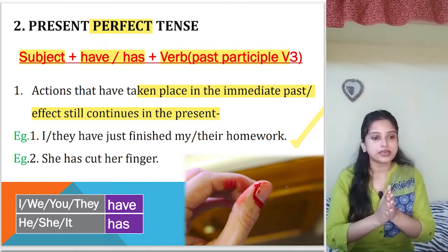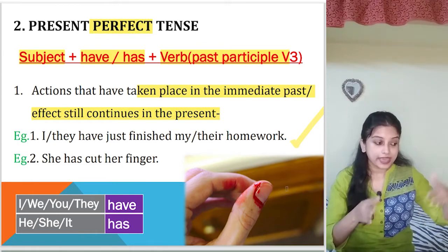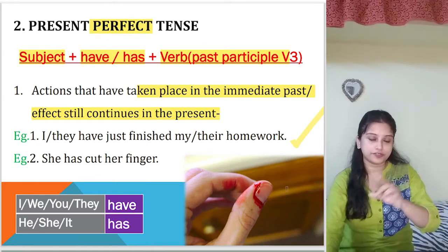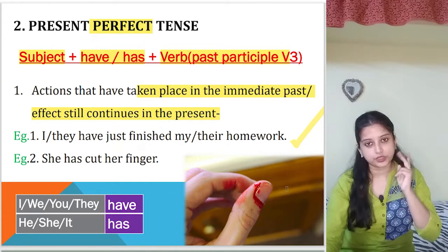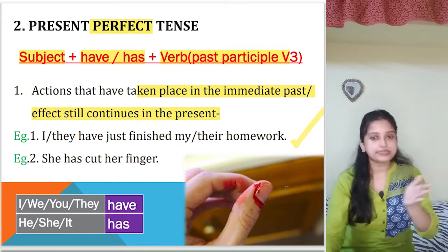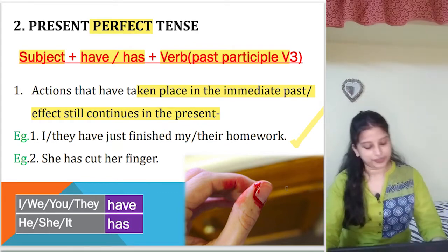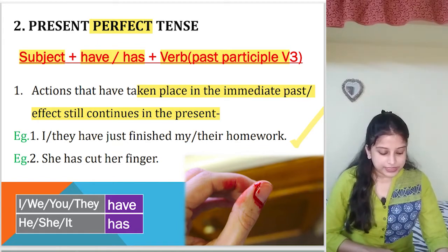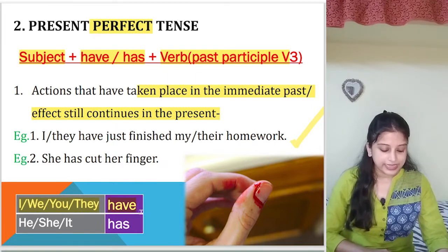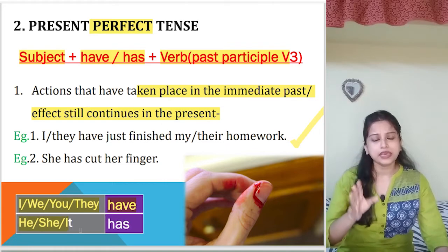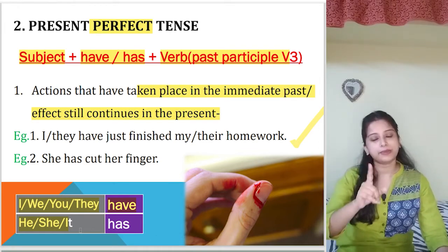Moreover, another case: if I have just finished singing — if you see the word 'just', it means in the immediate past it was done, so it will also be present perfect. Two cases: immediate past, and where the effect is still continuing — maybe you had biryani and you have a stomach upset. So: I/we/you/they use 'have' as the helping word; he/she/it uses 'has'. Third person singular takes 'has'; everything else takes 'have'.